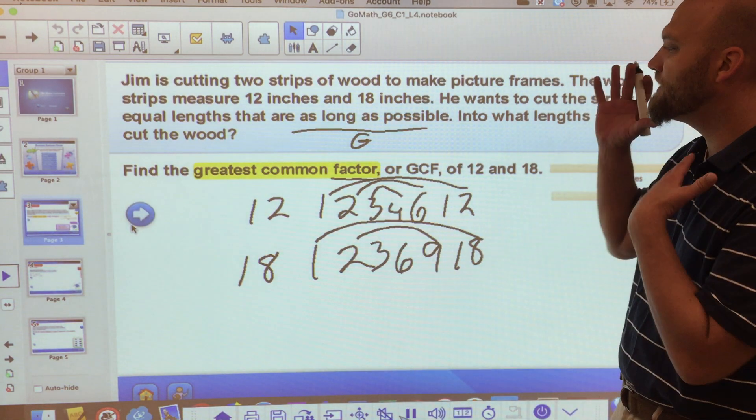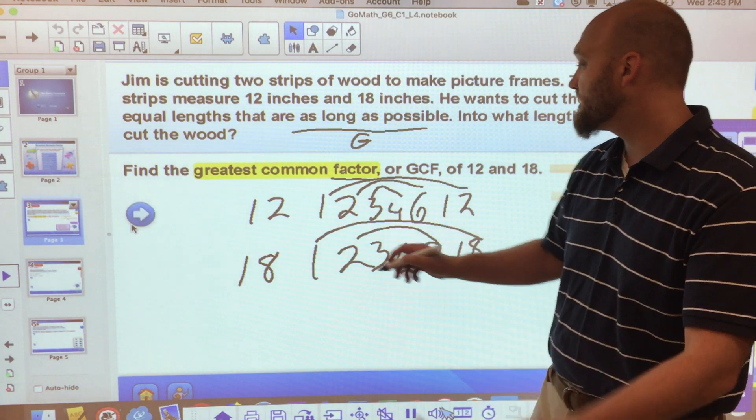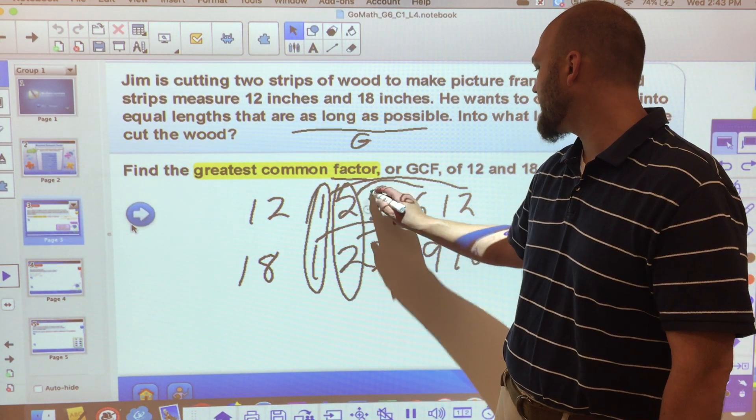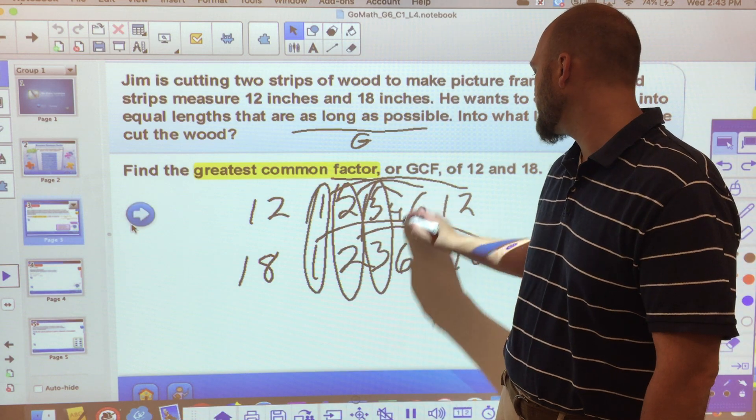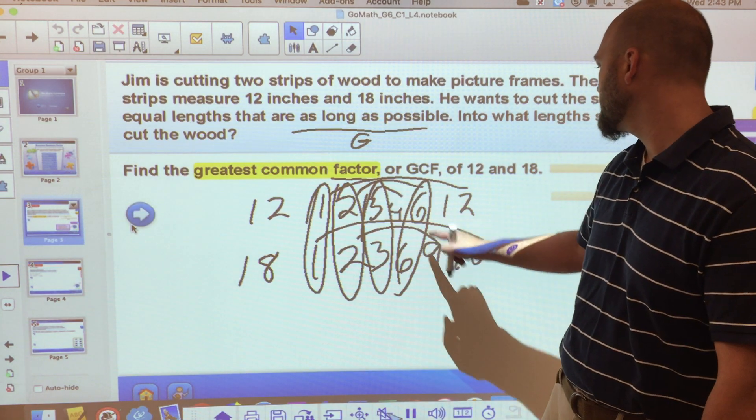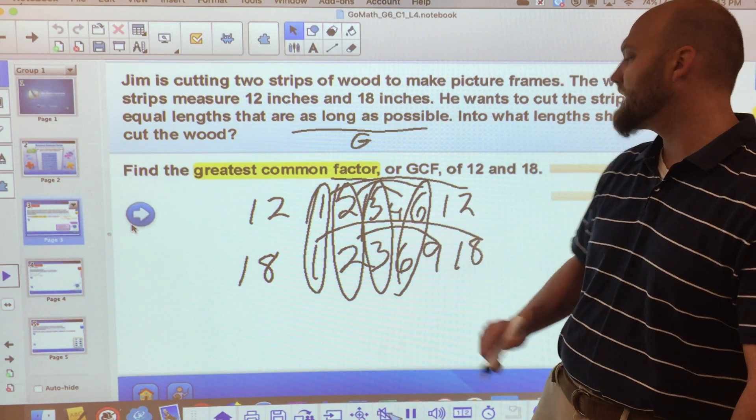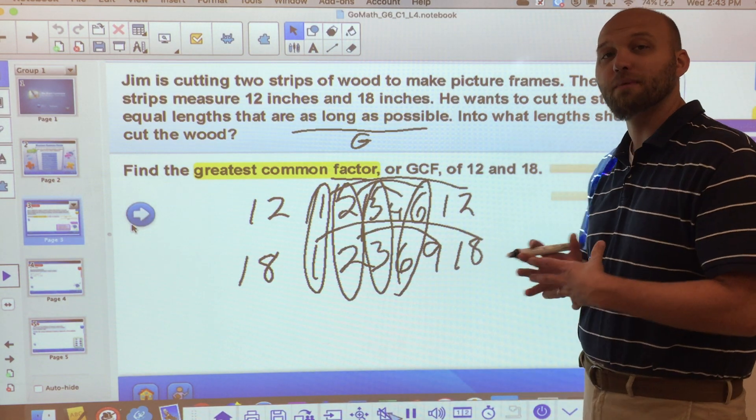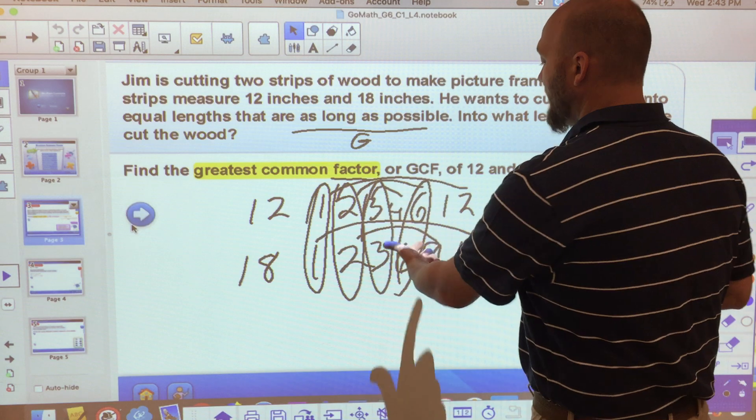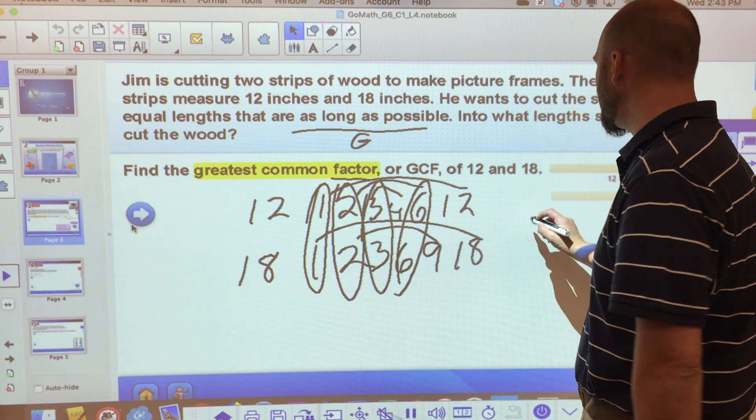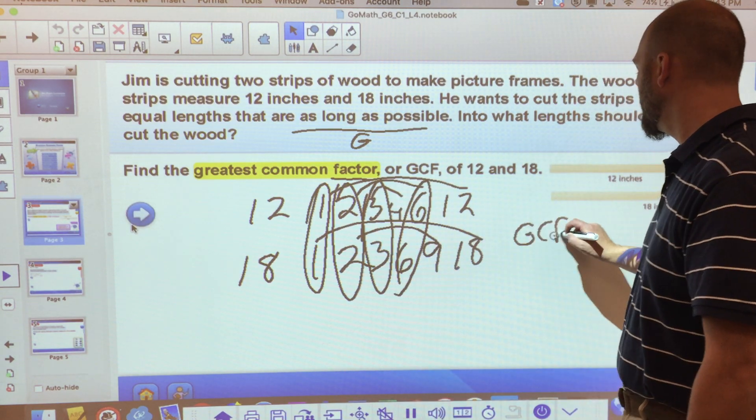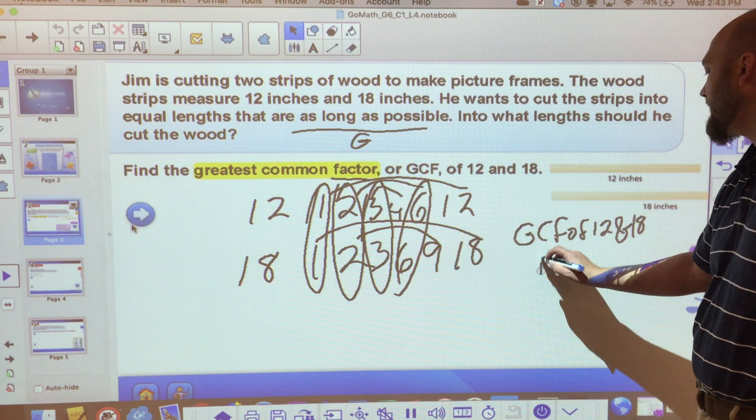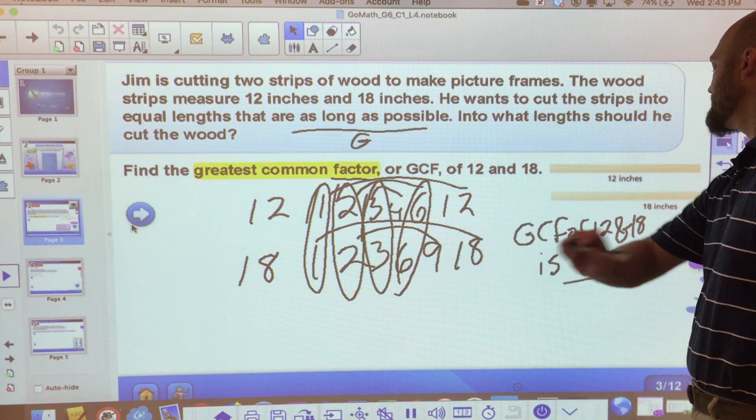Alright, so now I want the common factors. So I start. Well, obviously 1 is a common factor. 2 is a common factor. 3 is a common factor. 6 is a common factor. 4 is not. 9 is not. 12 is not. And 18 is not. So what is the greatest number that they have in common as a factor? Greatest common factor of 12 and 18 is 6.